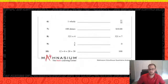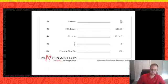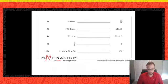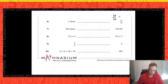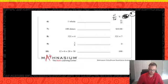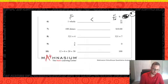On to the second half of page three. One whole compared to eleven tenths: if you've looked at improper fractions, you know that if the numerator is greater than the denominator, we have more than one whole. Ten tenths would be one whole, so eleven tenths means we have an additional piece — it's greater than one whole. Eleven tenths is greater than ten tenths.